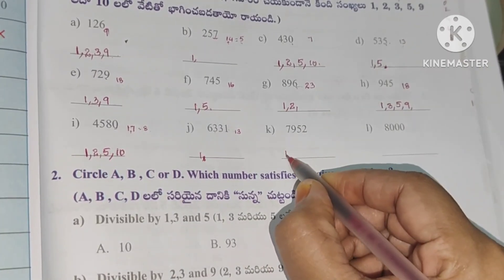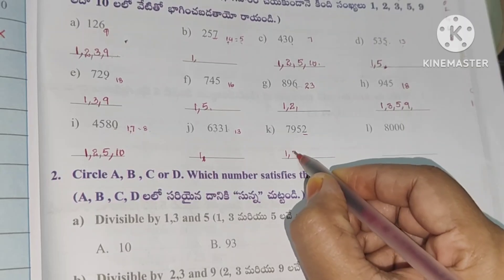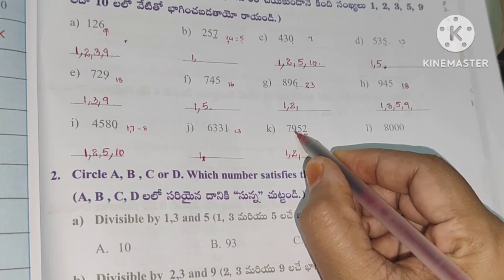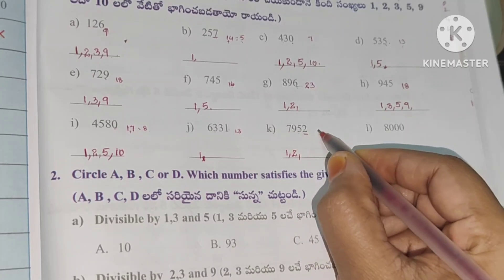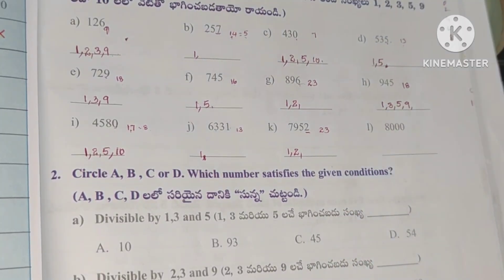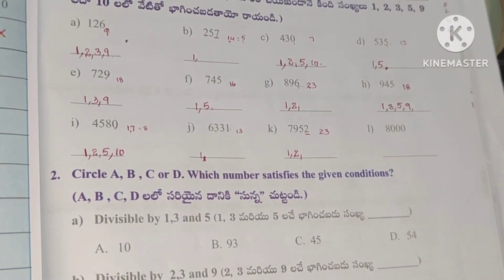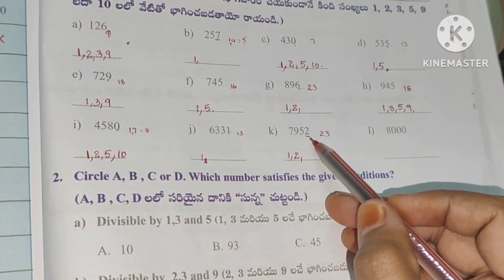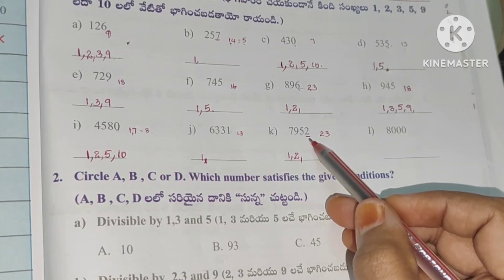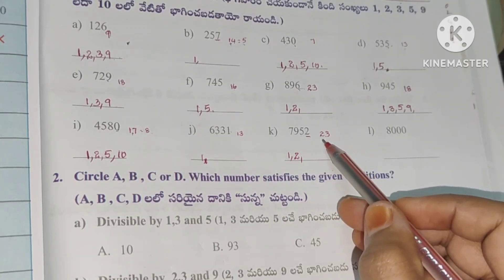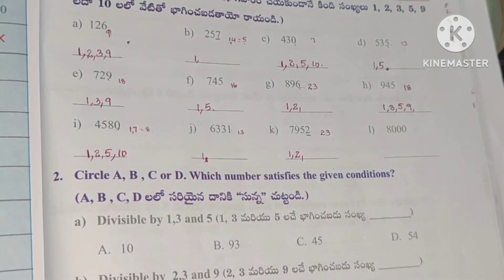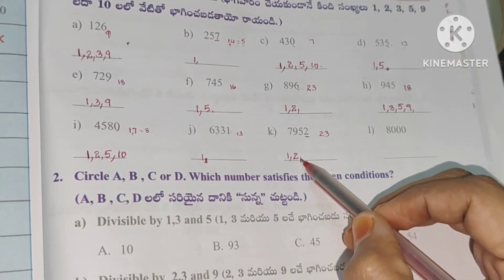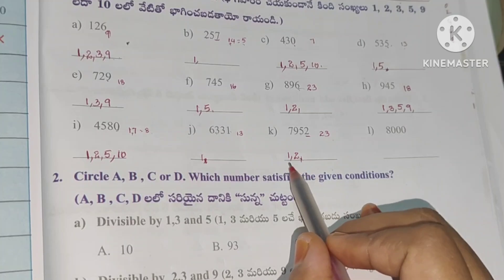Next number: divisible by 1. Units place is 2, so divisible by 2. Digital root: 7 plus 9 is 16, plus 5 is 21, plus 2 is 23. 23 is a prime number, so not divisible by 3. Units place is not 5 or 0, so not divisible by 5. Not divisible by 9. It is divisible by only 1 and 2.